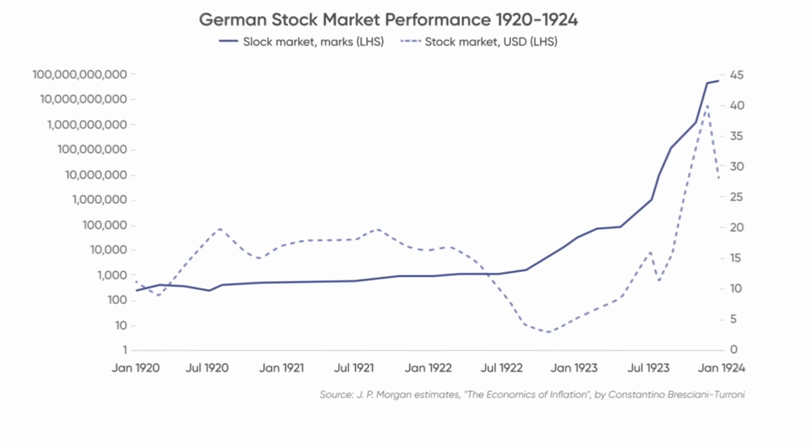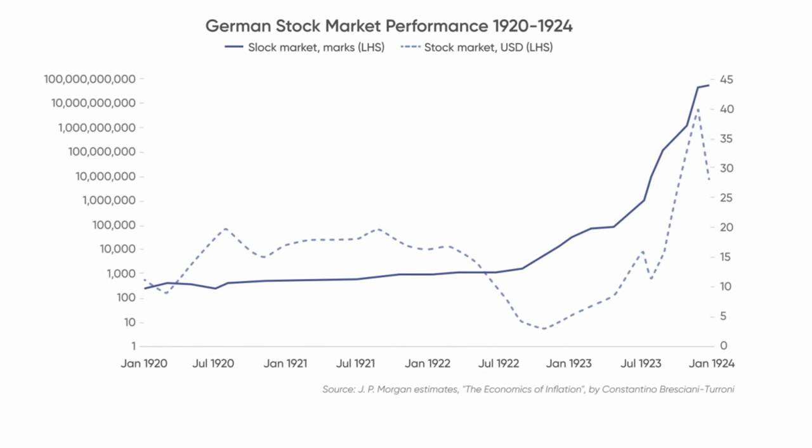We can see the same thing with the solid blue line being the stock market priced in marks during the hyperinflation in the Weimar Republic in Germany. As you'll notice on the y-axis with all the zeros, this is a log chart — so you can imagine how quickly those stock prices were accelerating higher.